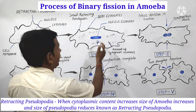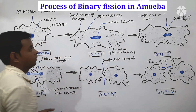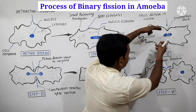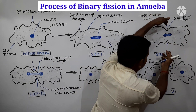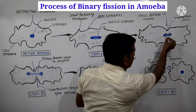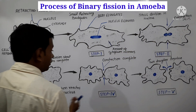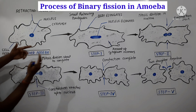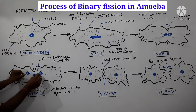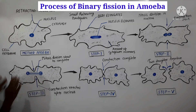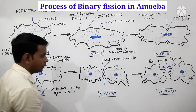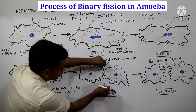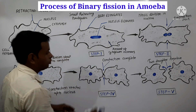The body of the mother amoeba elongates and its nucleus also elongates. In the next step, constriction starts from the outer side towards the inner side, and the nucleus starts to divide. In the next step, constriction reaches further inward, and the nucleus divides mitotically.